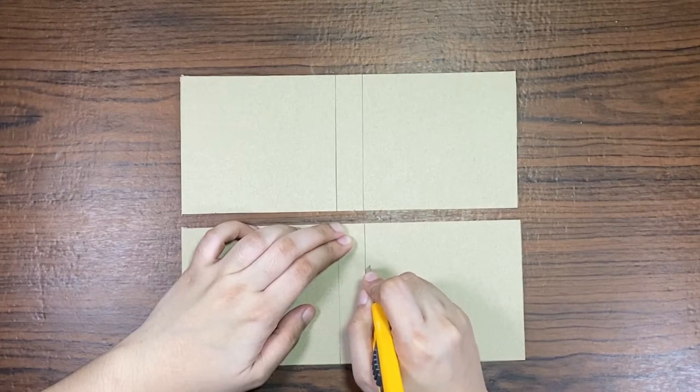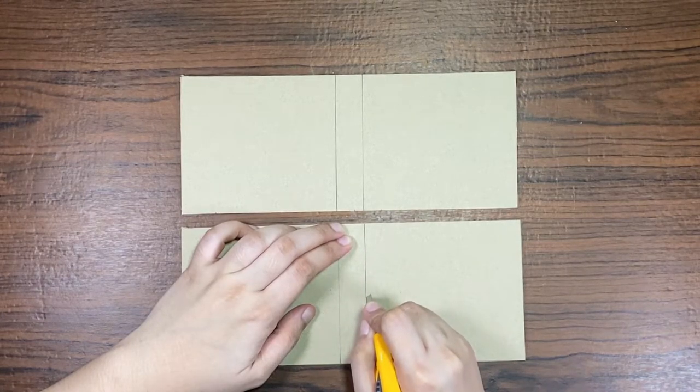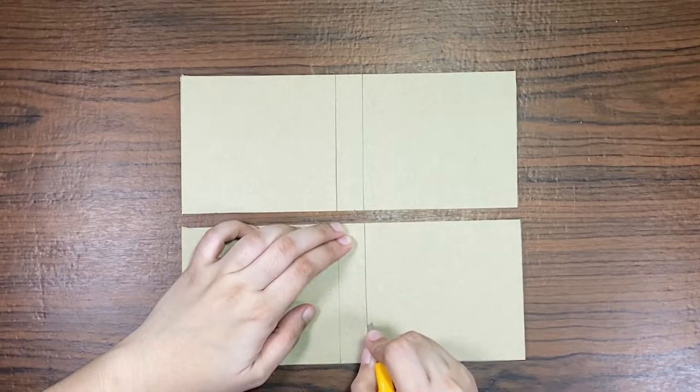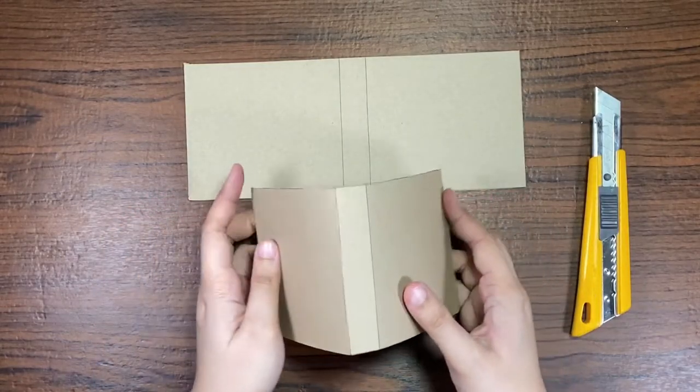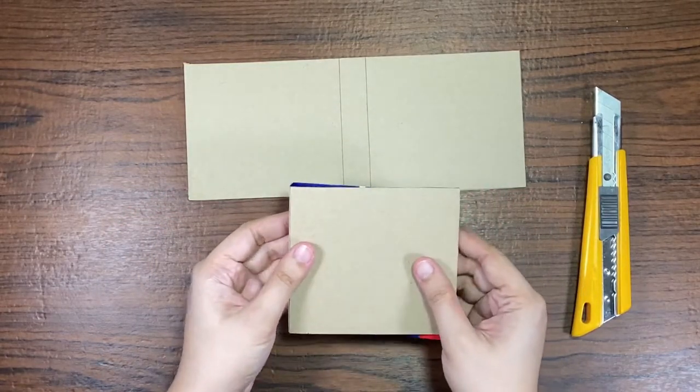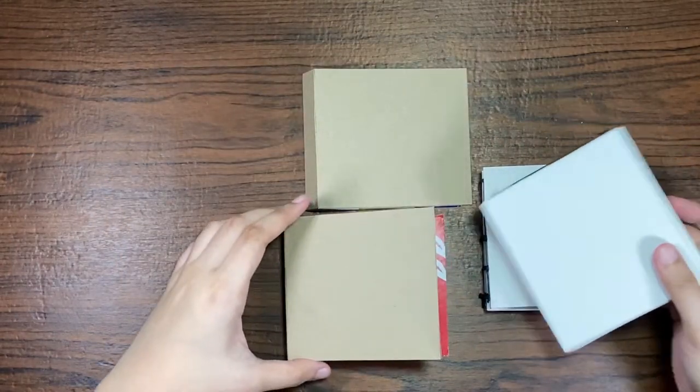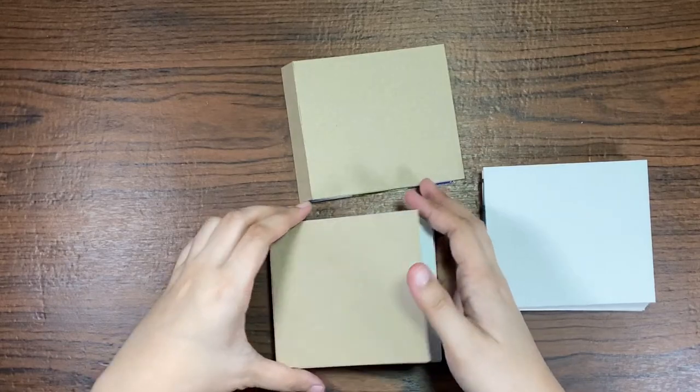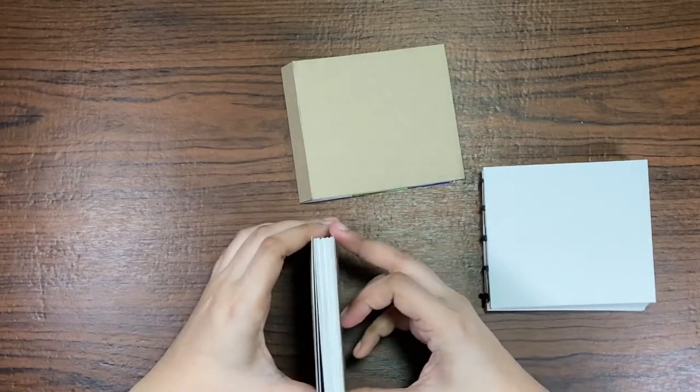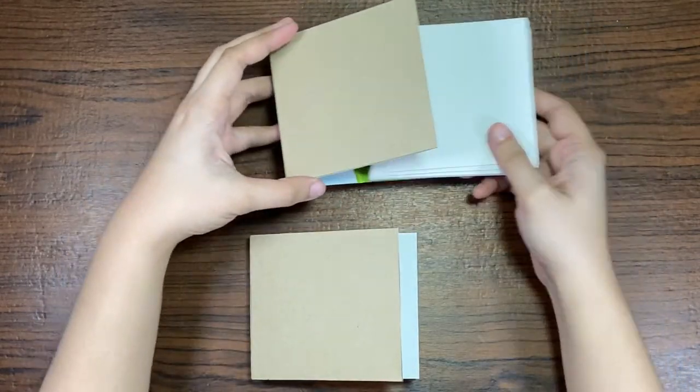Here I'm not cutting all the way through on the spine, just giving it a little cut so I can easily fold it like so. And as you can see, the paper sits perfectly inside of the cover.